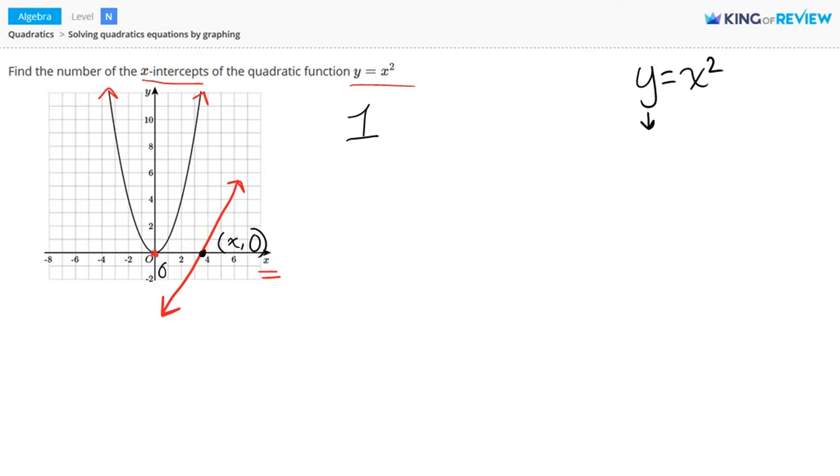Applying that to our equation, if we set y equal to zero, we get zero equals x squared. Now we can solve for x. If we expand this portion here, we get zero equals x times x.